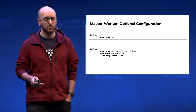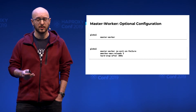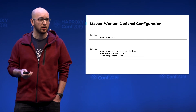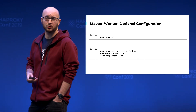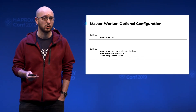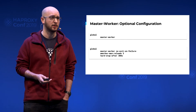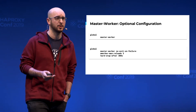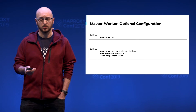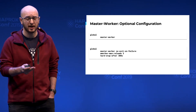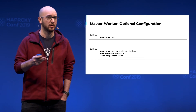The second keyword is mworker-max-reloads. It will tell the master to kill a worker after a certain number of reloads. For example, if you reload three times and the worker is still there because it still has work to do, it will be killed on the fourth reload. You can achieve the same thing but based on time with hard-stop-after — so after a certain amount of time, it will be killed.